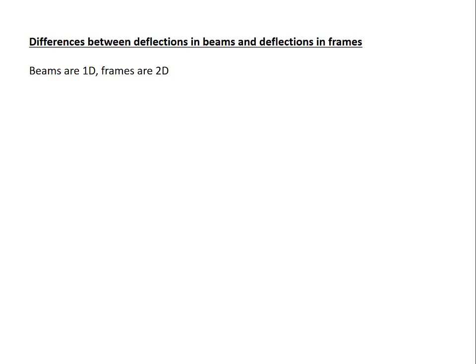We'll start by observing the differences between deflections in beams and deflections in frames. It's assumed that you already know how to do deflections in beams. If you're not strong with that, go back and watch that video. The main difference is that beams are one-dimensional, they're a line, typically horizontal, and frames are two-dimensional.